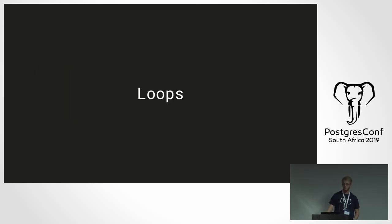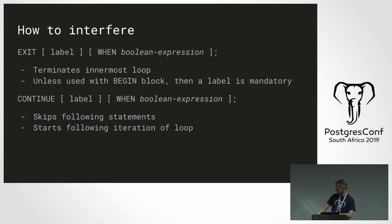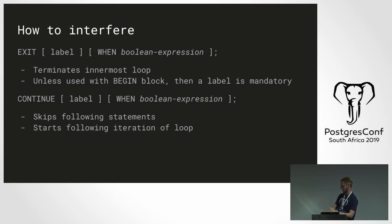Moving on, we also have looping structures in Postgres. The most basic one is the normal LOOP statement — an unconditional loop that will always continue looping until it encounters a RETURN or an EXIT statement. You can add labels to jump to with your CONTINUE and EXIT statements. EXIT and CONTINUE work like goto, break, and continue statements in C and C++. This will break the innermost loop unless an EXIT is in a BEGIN/END block, in which case it will only exit that block and continue with the statements from then on.